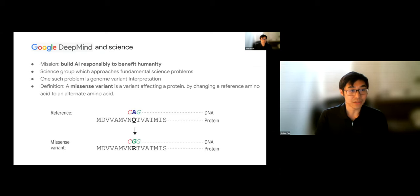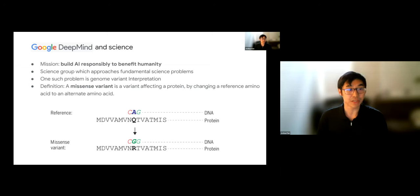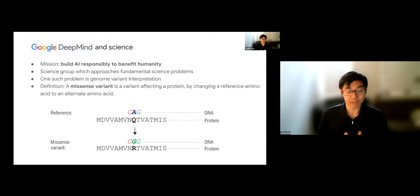Google DeepMind is a unit inside of Google whose mission is to build AI responsibly to benefit humanity. As part of that mission, we have a group dedicated to science, applying AI and machine learning to fundamental science problems. One such problem is the problem of genome variant interpretation, and there are many different kinds of genetic variants. The focus of today's webinar will be on missense variants.